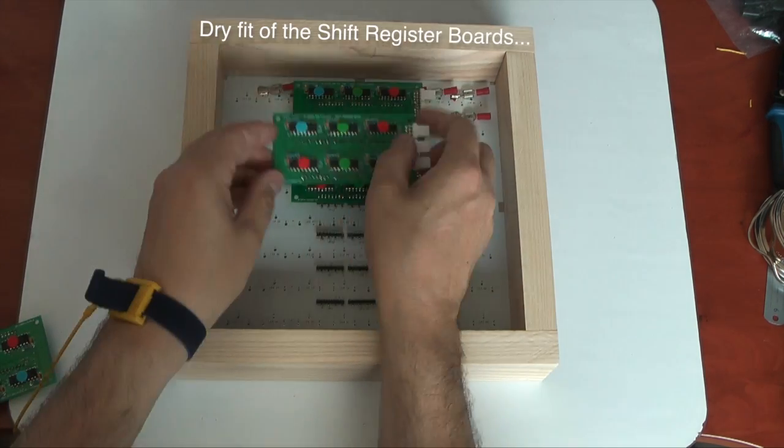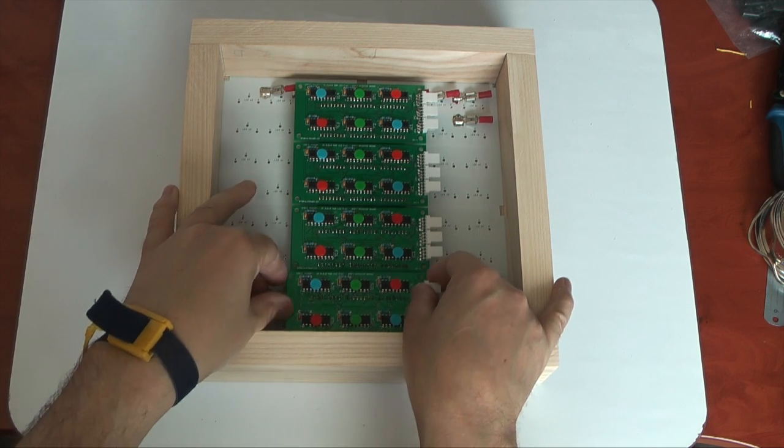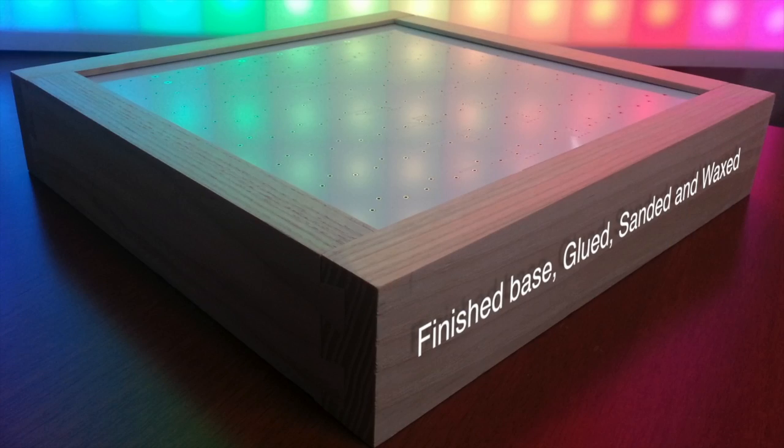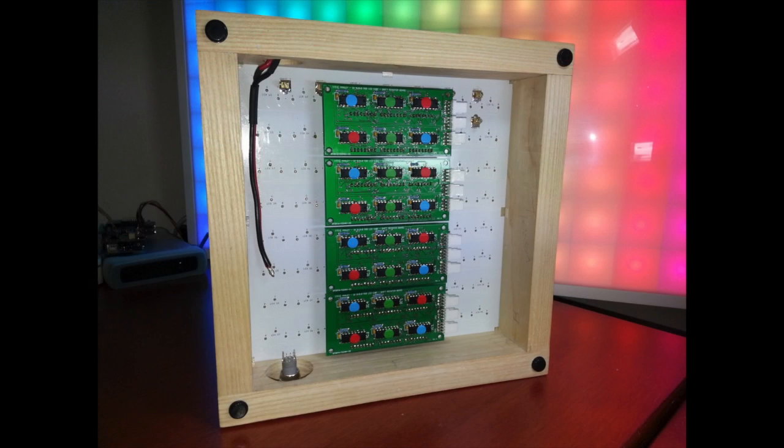The next step was to do a dry fit of the shift register boards just to make sure all the clearances were okay. And here is the finished base. In the next image you'll see I've used the screw terminal version of the base circuit board. You'll also notice there's a power wire and a switch been added.